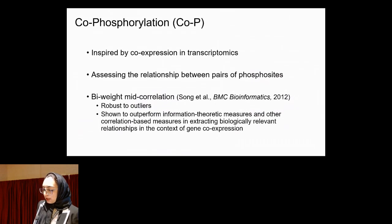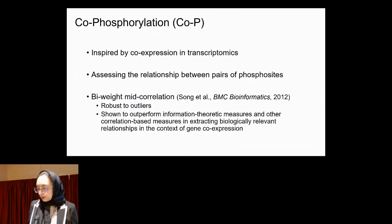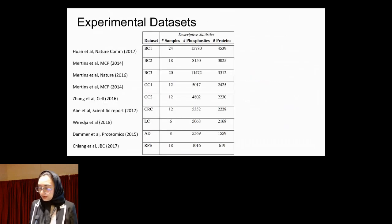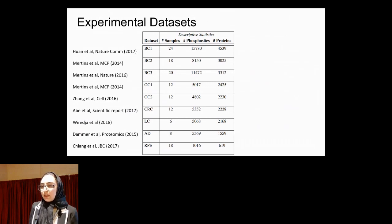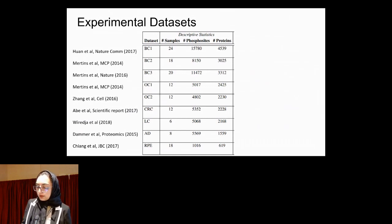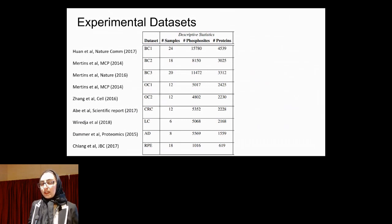Biweight correlation has also been shown to be better than mutual information and other concepts in co-expression analysis. To investigate how co-phosphorylation is relevant, we use nine different mass spectrometry databases that are publicly available across different publications. Here we report the number of samples, the number of phosphosites, and the number of proteins that these phosphosites map to.